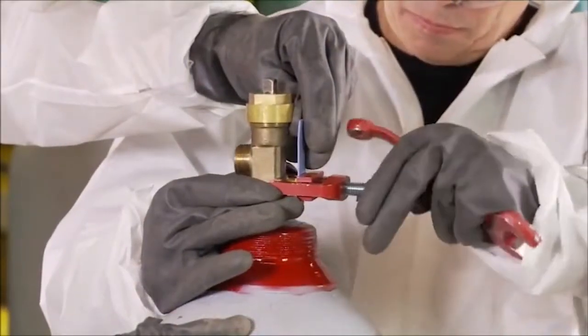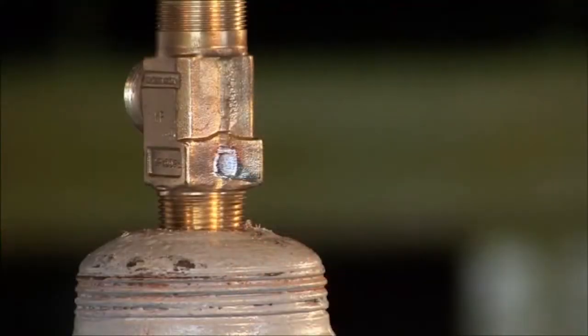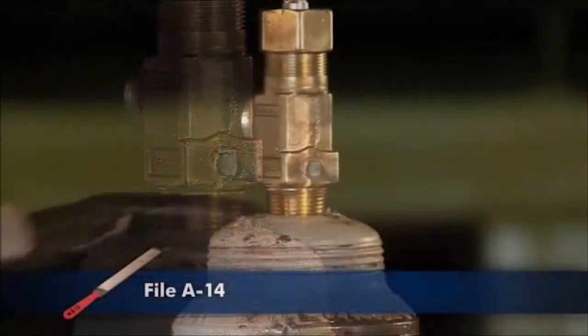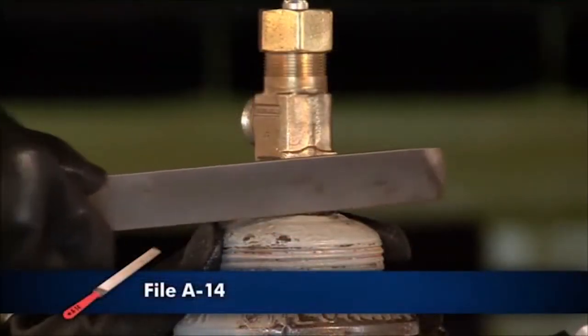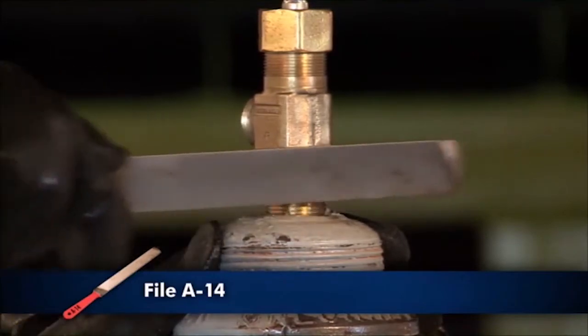Apply device 2. If the leak is in the fusible plug metal, file the surface of the fusible plug smooth if necessary and apply device 2.